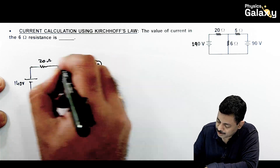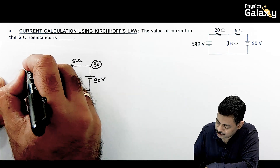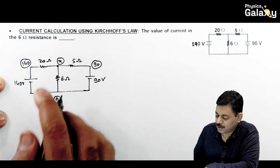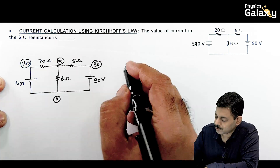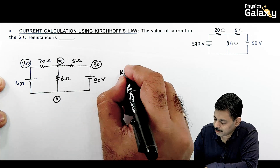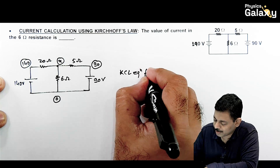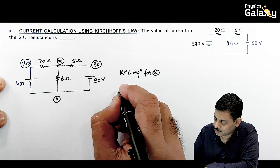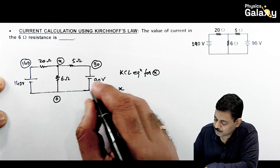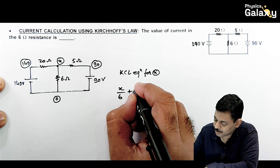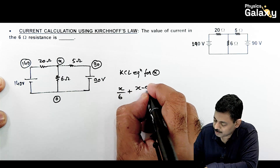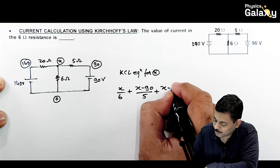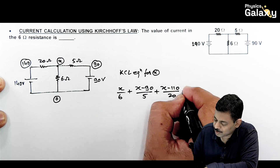If we consider the potential at one node to be 0, then the adjacent node is 90V, another is 140V, and the unknown node is x. Writing the KCL equation for node x: (x − 0)/6 + (x − 90)/5 + (x − 140)/20 = 0.